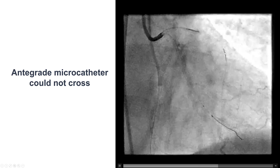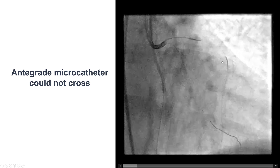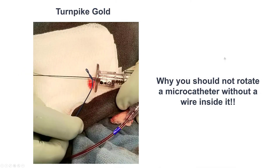Multiple attempts were made with the retrograde microcatheter and antegrade microcatheter, and unfortunately neither could go through the area of occlusion, likely due to significant calcification. One issue encountered was with the Turnpike Gold — spinning the microcatheter without a wire completely through, since the retrograde wire was only partially in, caused deformation of the proximal shaft.